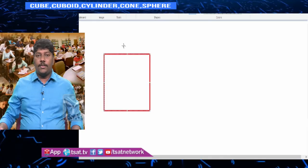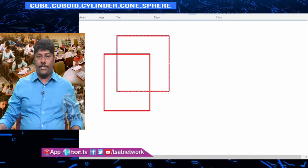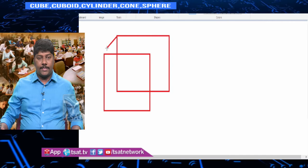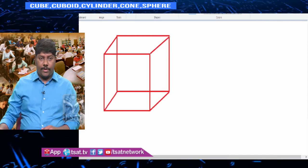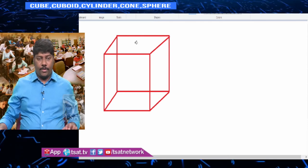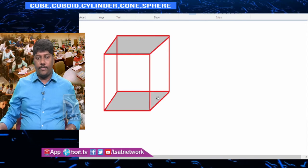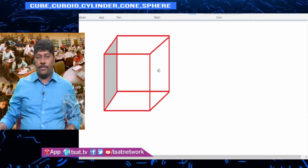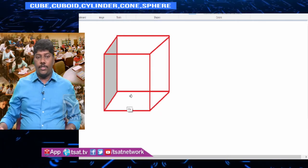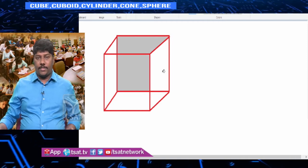We will start with a cube. A cube is actually a square prism where all the surfaces are the same. For a cube there are six surfaces — all equal. There is an upper surface, a bottom surface, two side surfaces, and a front and back surface.